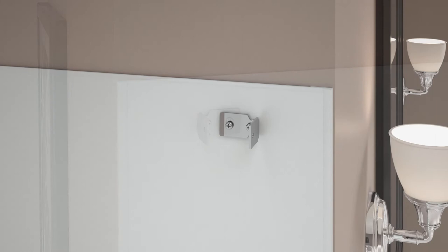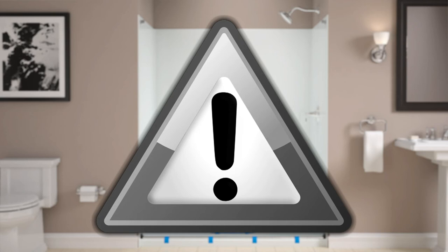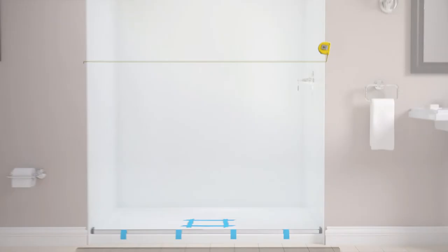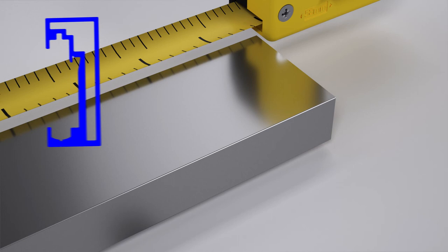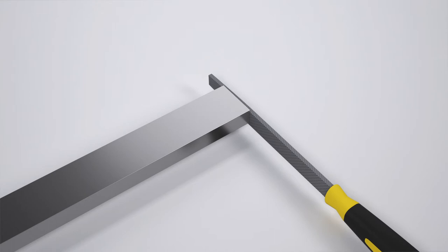Ensure that the brackets are level. If the brackets are not level, loosen the screws and adjust as needed. Confirm all measurements before cutting the header; do not cut the header too short. Measure the distance between the walls and mark the distance on the header. Using a handsaw, position the blade just inside the marked line and cut the header. File any rough edges and clean any debris from the header channel.